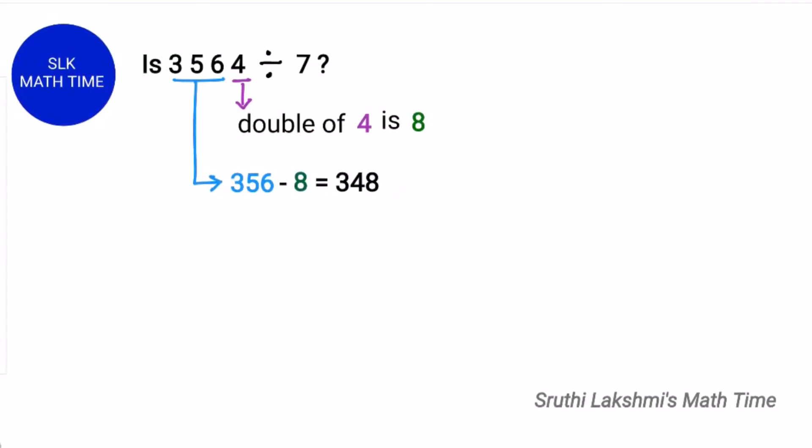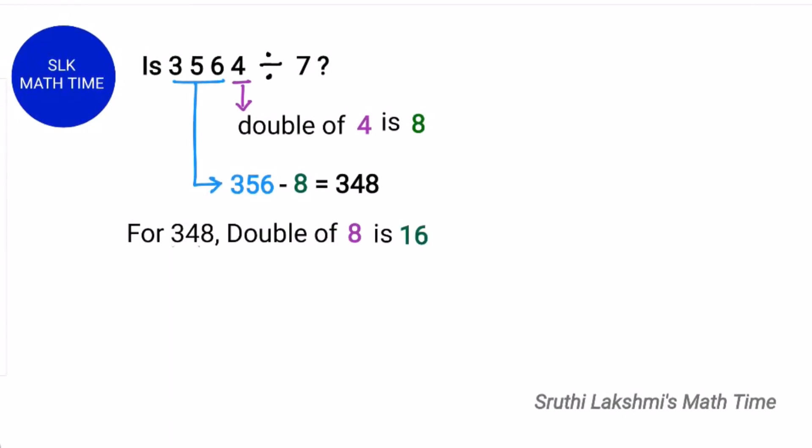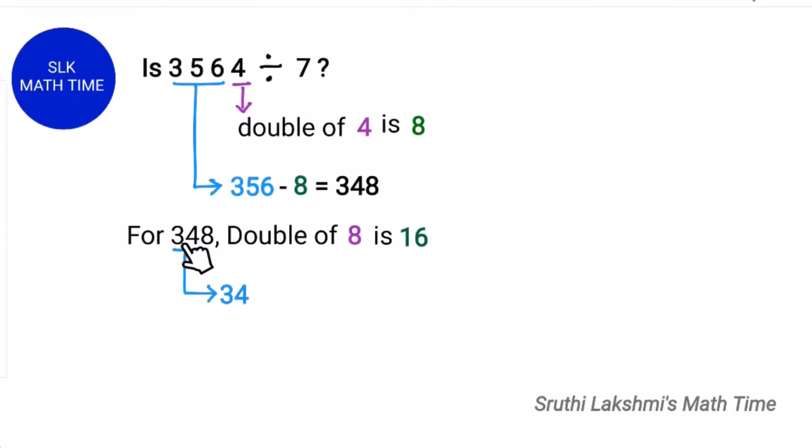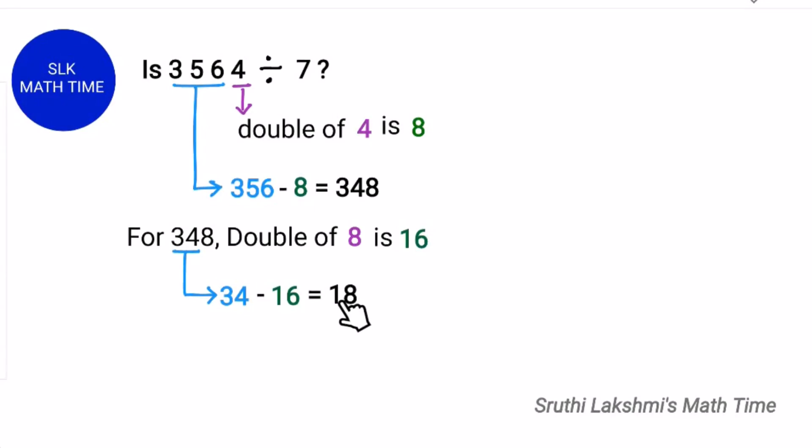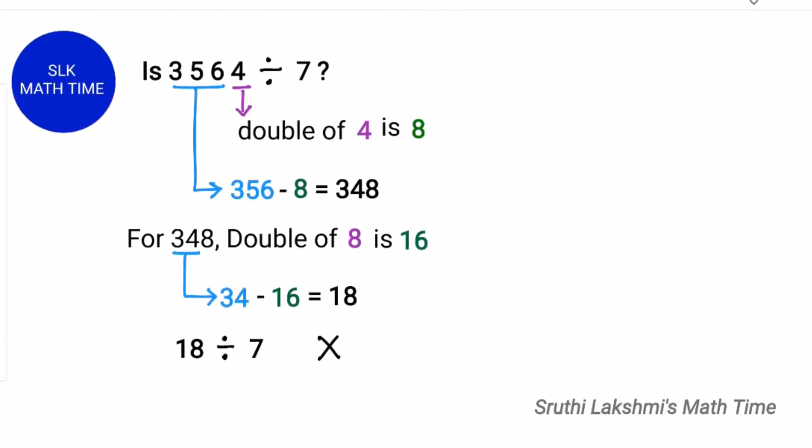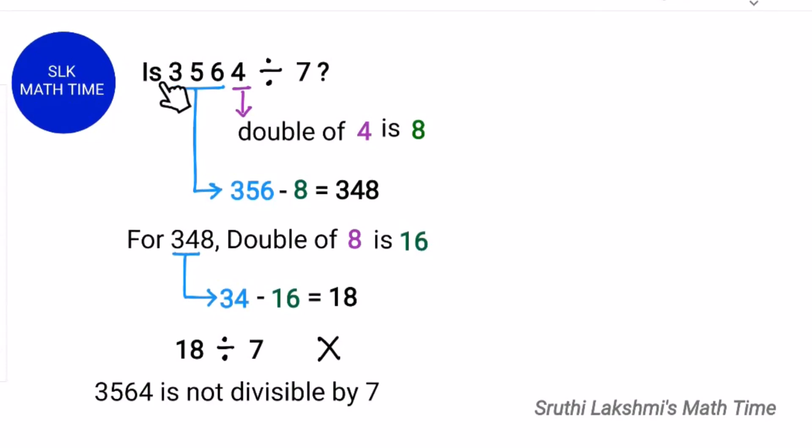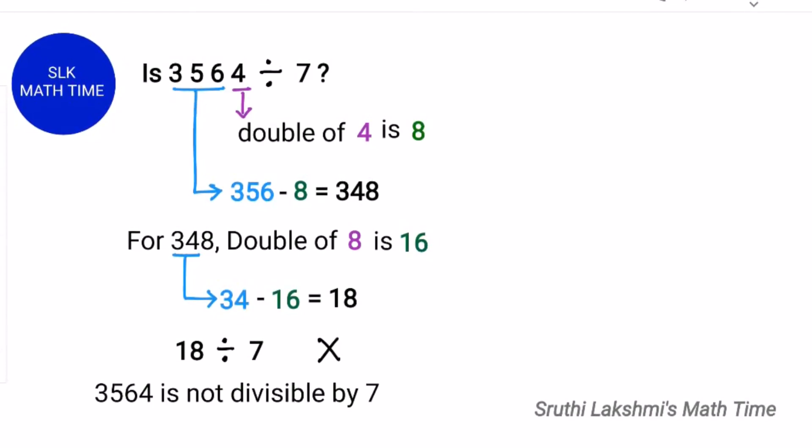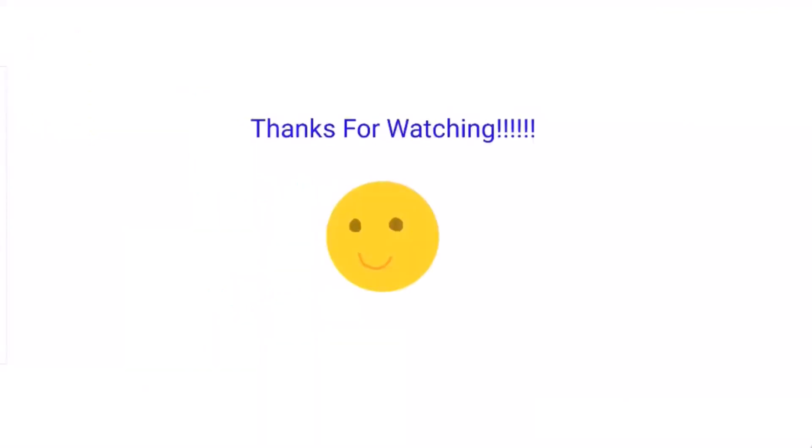So 34 minus 16 because the rest of the digits here is 34. 34 minus 16 is 18. Is 18 divisible by 7? No. So 3564 is also not divisible by 7.